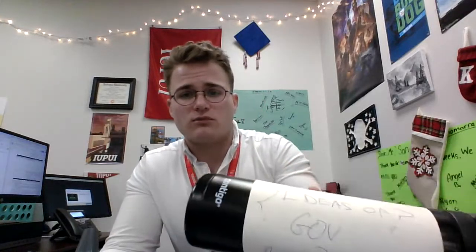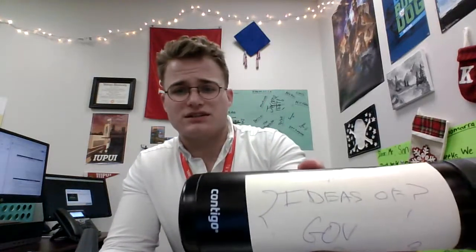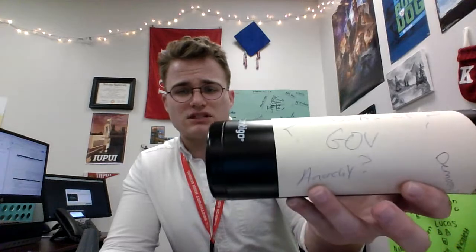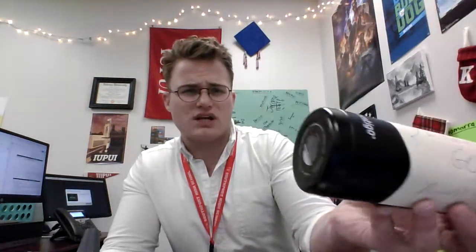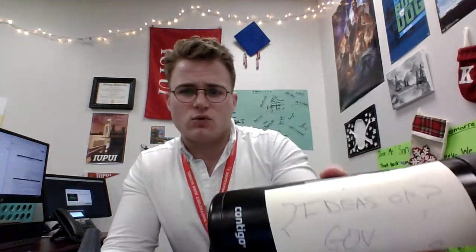At some point, every society has to do this. So in order to explain how this process works, I have three simple objects. First, I have my water bottle. It represents the different ideas of government. Some examples include anarchy, democracy, or monarchy. What other kinds of government exist? This bottle represents all the kinds of governments that exist that you're learning about in this class.